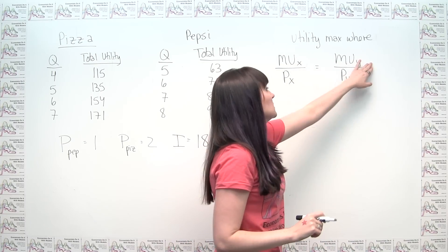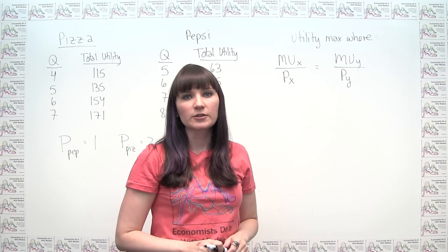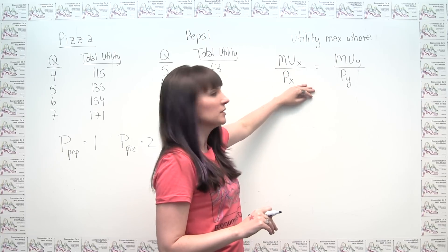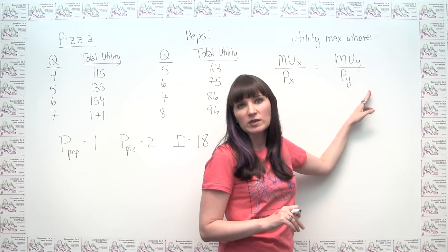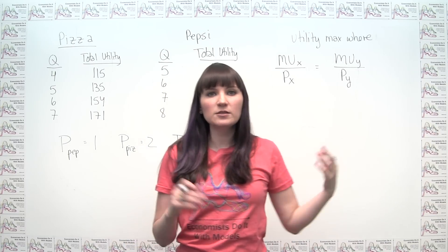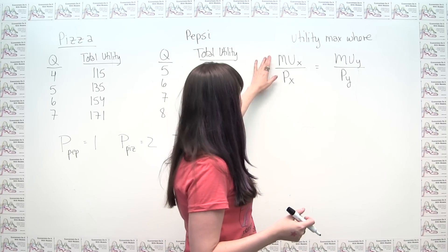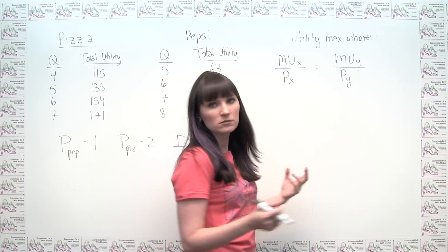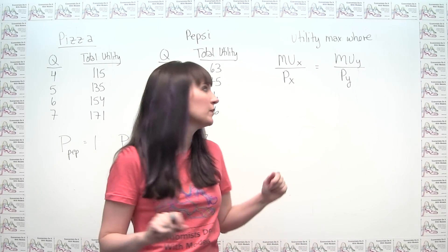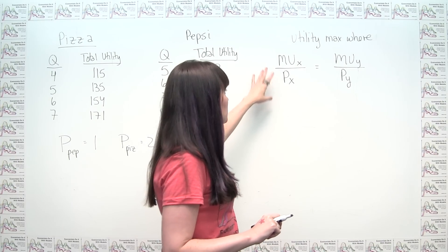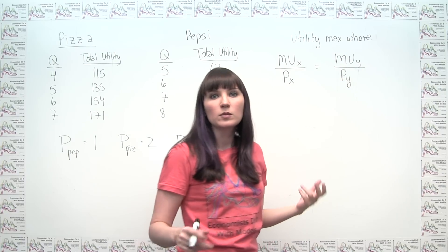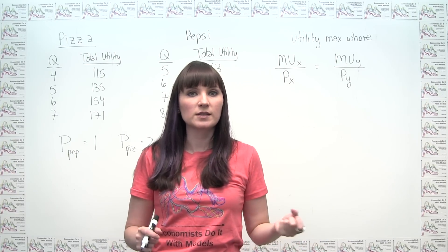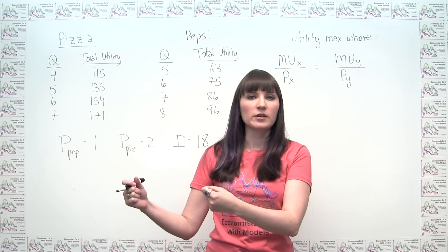Our two goods are Pepsi and pizza, so we say the marginal utility of Pepsi divided by the price of Pepsi has to equal the marginal utility of pizza divided by the price of pizza. Each of these quantities represents happiness per dollar — additional happiness per dollar — or, in a somewhat literal and figurative sense, bang for the buck. Your utility is maximized where you're getting the same bang for your buck from both goods. If you could leverage your money more on one good to get more happiness per dollar, you should shift more to that thing, and vice versa.